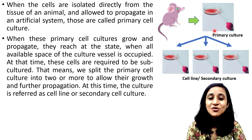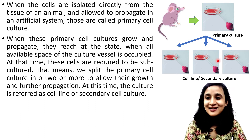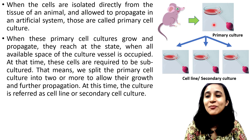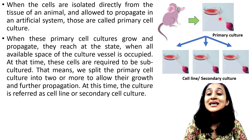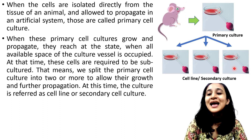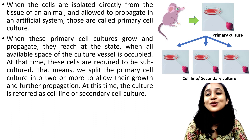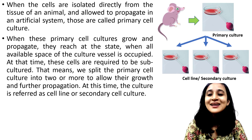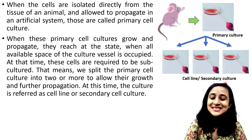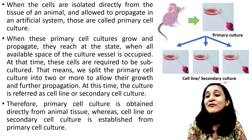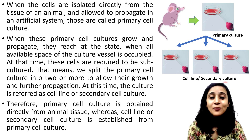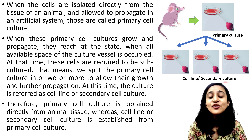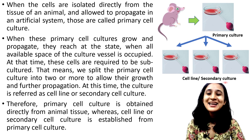At this time, the culture is referred to as a cell line or secondary cell culture. Here you can see this primary cell culture being divided into three plates, so these three plates are now called cell line or secondary cell culture. Basically, cell line and secondary cell culture are the same. Therefore, primary cell culture is obtained directly from animal tissue, whereas cell line or secondary cell culture is established from primary cell culture.